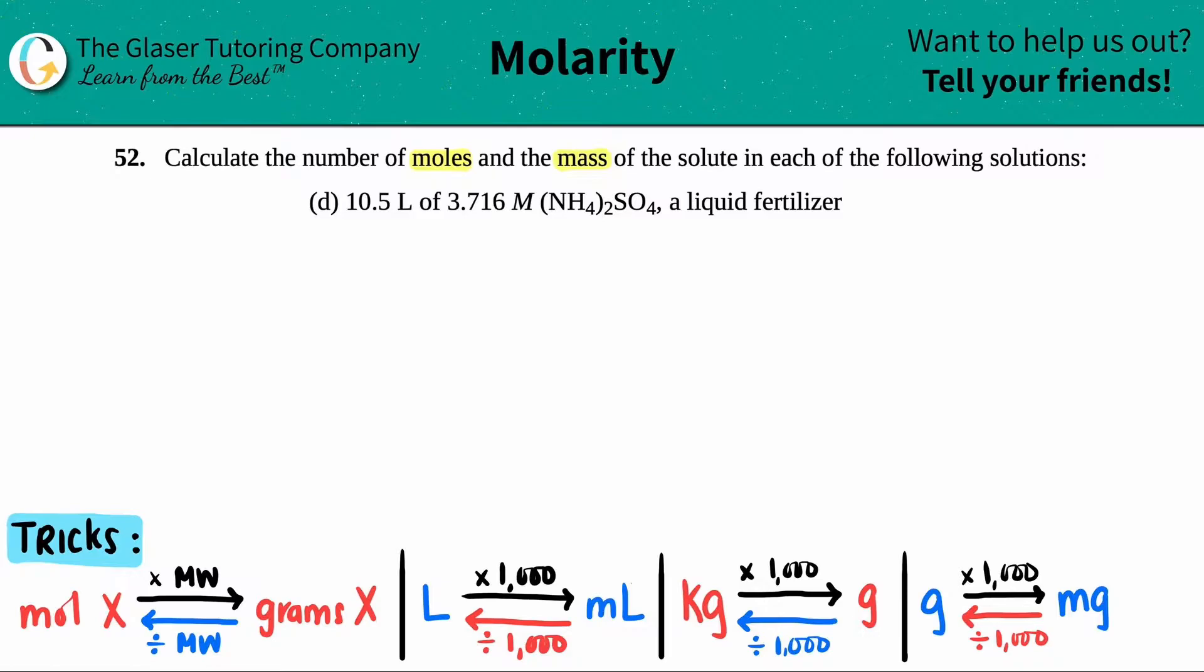Now in this example, they gave us 10.5 liters of a 3.716 molarity solution of ammonium sulfate, NH42SO4. And ammonium sulfate is a liquid fertilizer. Thank you for that little piece of information. Awesome.